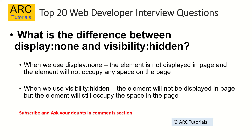An important CSS question: what is the difference between display:none and visibility:hidden? When we use display:none, the element will not be displayed on the page at all, and it will not occupy any space on the web page. With visibility:hidden, the element will not be displayed, but it will still occupy space in the page. That is the major difference — both hide the element, but display:none removes the space whereas visibility:hidden retains it.